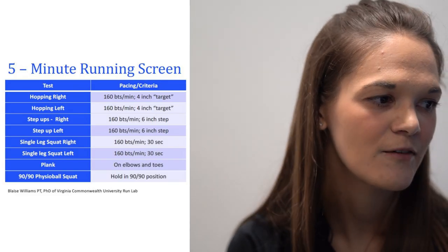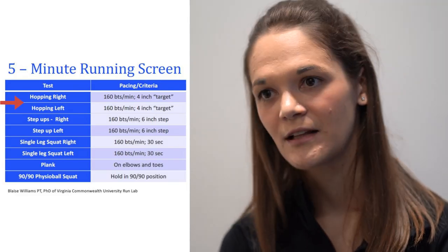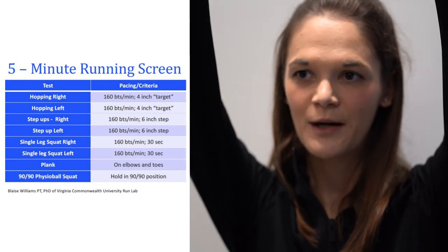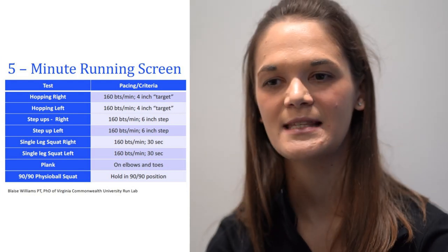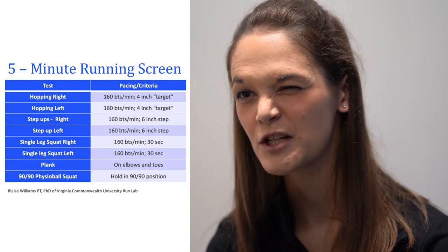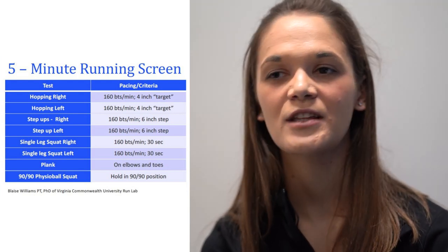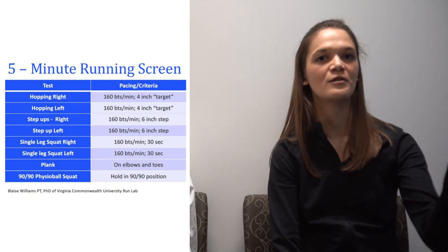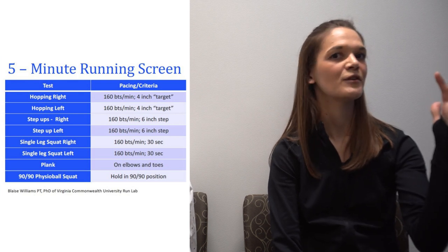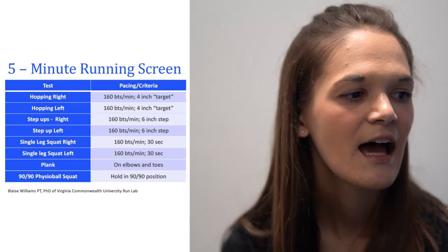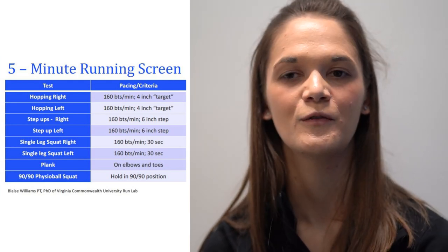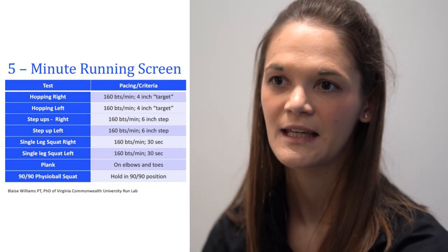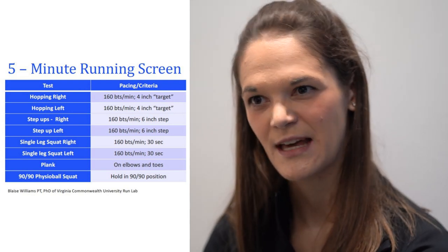We begin with the single leg hop. Set your metronome to 160 beats per minute, raise your arms up towards the ceiling, and place a target about four inches above. Each leg jumps for about 30 seconds in two phases — lowering and rising through the beat. You want to make sure your knee stays aligned, keeping your hip, knee, and ankle in line with that second toe.